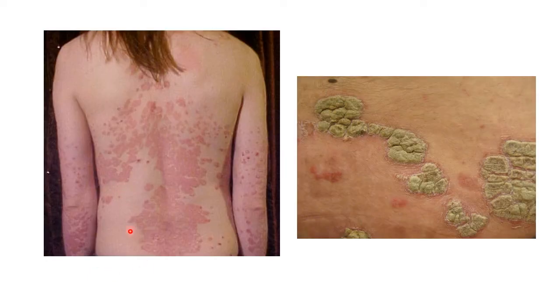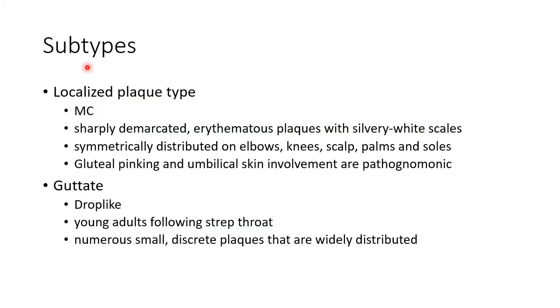This picture shows a patient with psoriasis — this is a psoriatic plaque. Now let us see about the subtypes of psoriasis. The localized plaque type is the most common type of psoriasis.